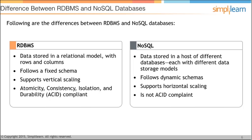RDBMS has ACID properties: Atomicity, Consistency, Isolation, and Durability. All four of these properties are covered in RDBMS. I've been teaching Hadoop and MongoDB for about two and a half years, and in each class I find at least 70% of people who aren't very sure what ACID properties are, so I'll spend some time on them.